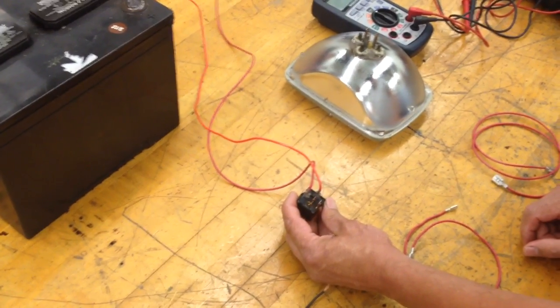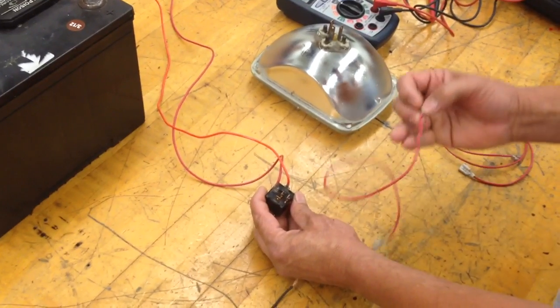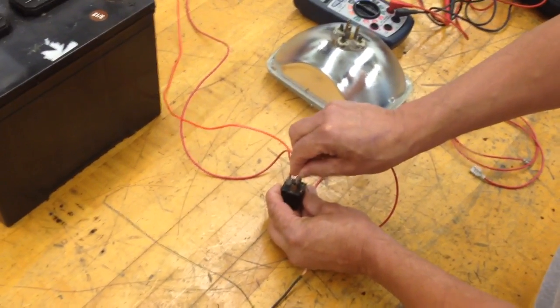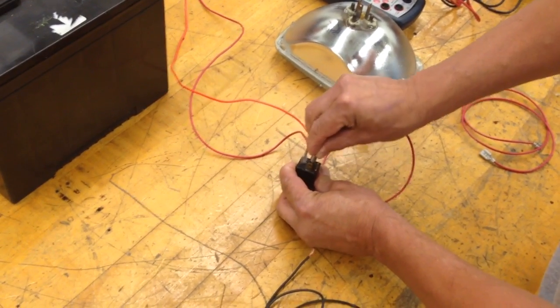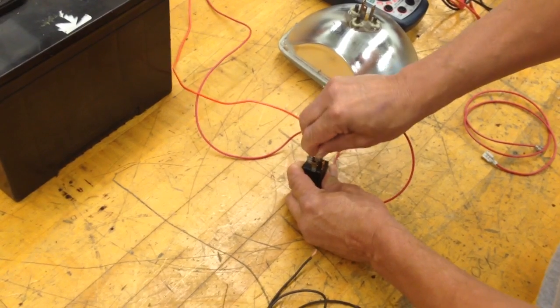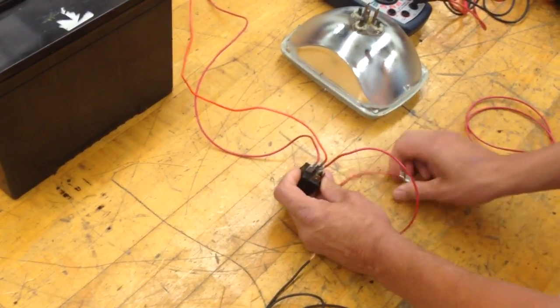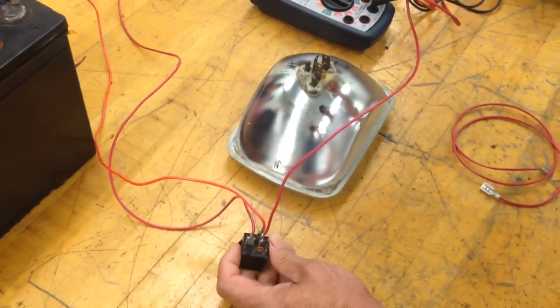From there, we're going to take a red wire and connect it to pin 87A on the relay. And that's going to go to the low beam on the headlight. Notice those connections are tight. That's exactly how you want it, otherwise you could have a bad connection.